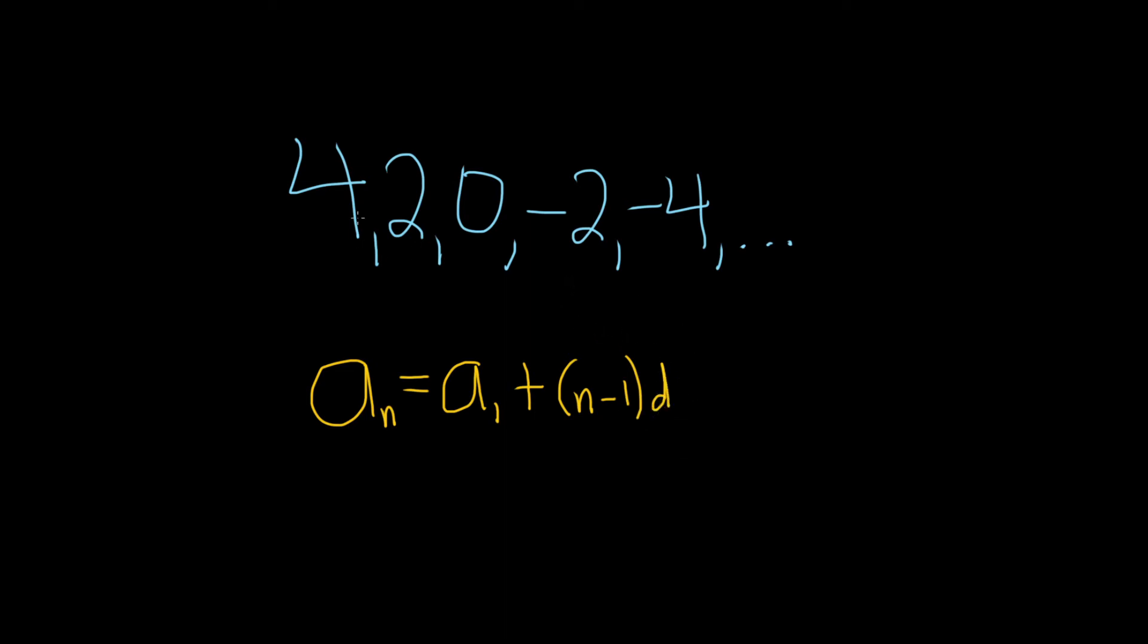d here is called the common difference. It's the number that we keep adding. So the common difference in this case is actually negative, so d is negative 2.